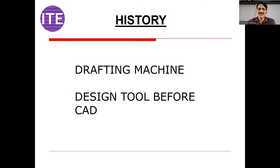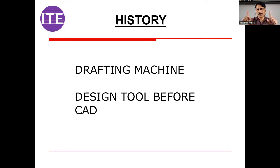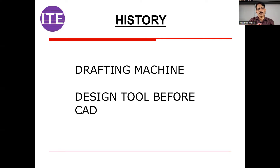If you understand the history of how it started — in earlier days, around 1991, we were using drafting machines for generating drawings. You can now see those machines only in a museum. You had to stand whole day, put tracing paper on the board, use a pencil to create the sketch, and then use a rotary ink pen to redraw it. That tracing paper was the master drawing, and by using an ammonia printing machine, we used to take the blueprint.